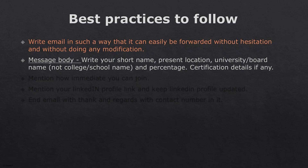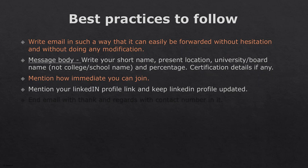In the message body, write your short name, your present location, your university and board name — it's not necessary to write your college name or school name because no one cares about those. What people care about is the university and board. Include the percentage you got, any certifications, and make sure you include your LinkedIn profile link with an up-to-date profile. If a person opens the link, they get a full view of your profile in one go.